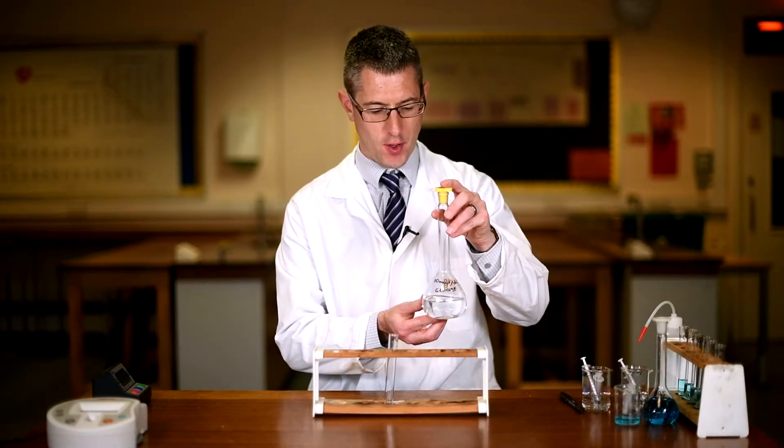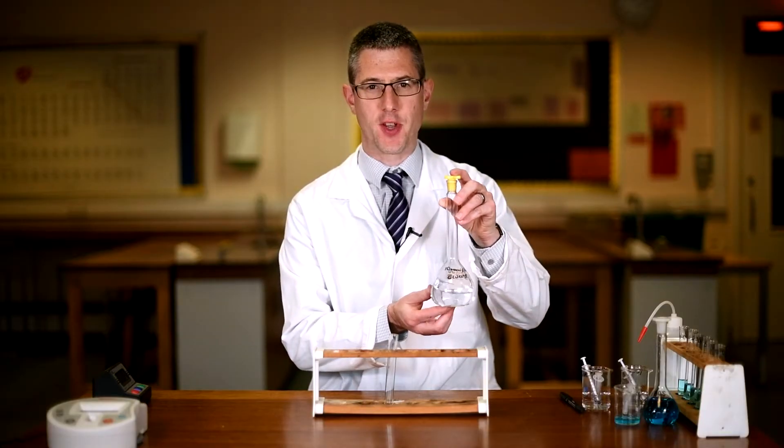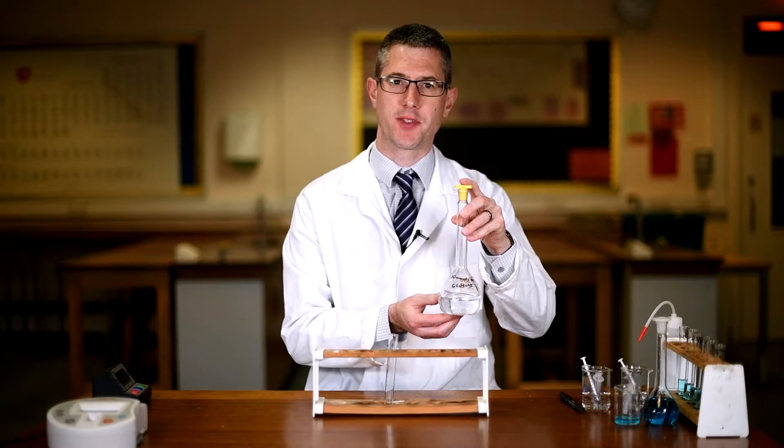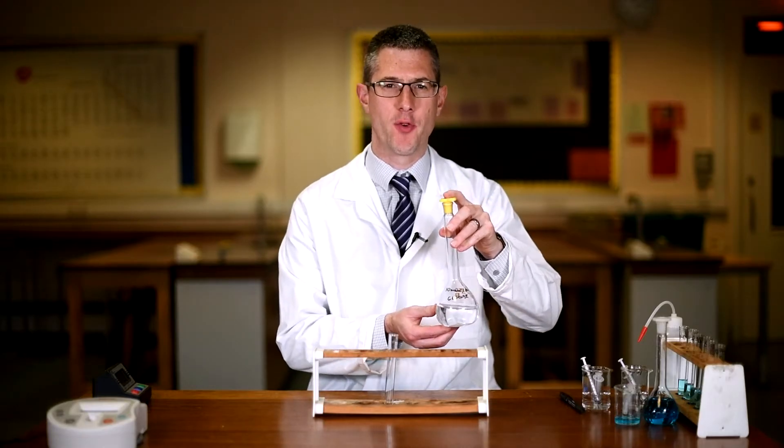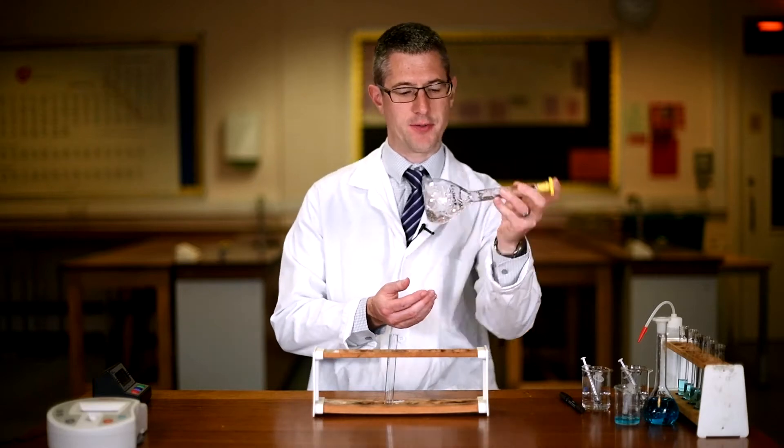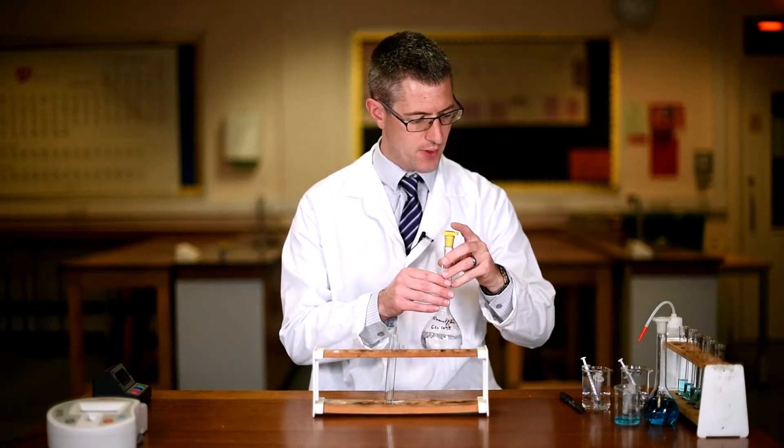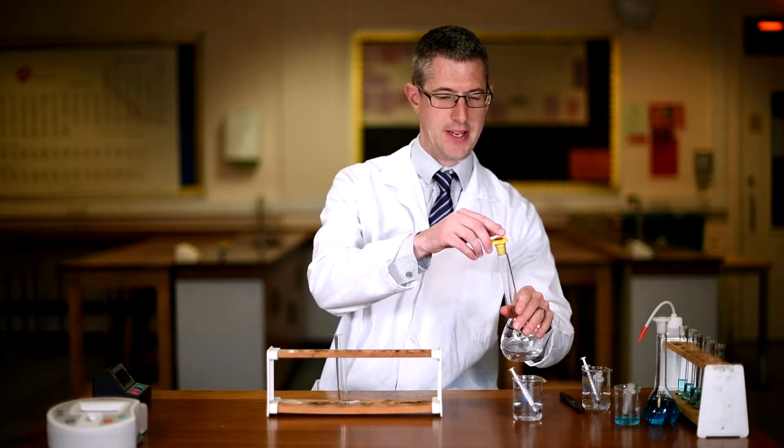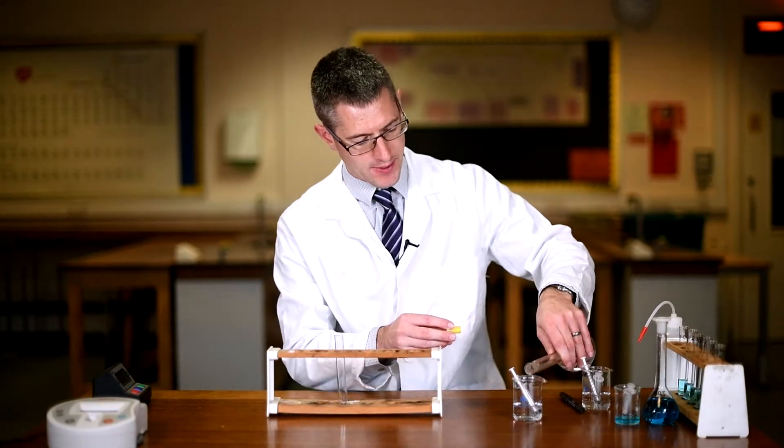So we have our stock solution of 10 millimoles per decimeter cubed of glucose. We need to make a dilution series of this to produce six test tubes, each of a known concentration of glucose. So give it a good shake, make sure it is fully suspended. We'll decant some glucose into a beaker so it's easier to use a syringe to get the glucose.